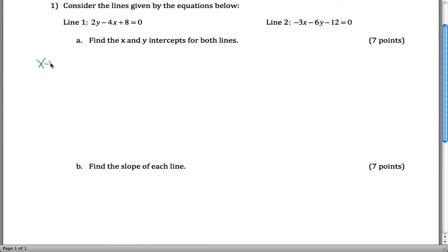X-intercepts occur when y equals 0. So in Line 1, we would get 2 times 0 minus 4x plus 8 equals 0, which is negative 4x plus 8 equals 0. If I subtract 8 from both sides, I get negative 4x equals negative 8. Then I divide both sides by negative 4. Negative 8 divided by negative 4 is positive 2.